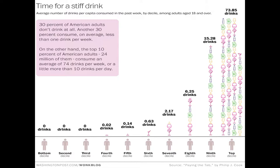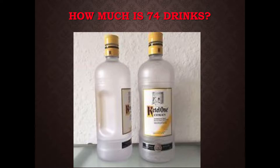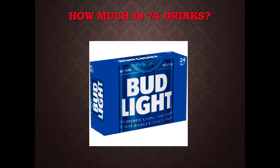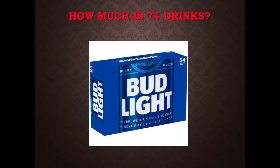The top 10% of American drinkers — meaning 24 million adults over the age of 18 — consume, on average, roughly 74 alcoholic drinks a week. 74 drinks equate to two 1.5-liter bottles of hard alcohol, 18 bottles of wine, and three 24-can cases of beer in one week. That's 3,800 drinks a year. You're a busy drinker.